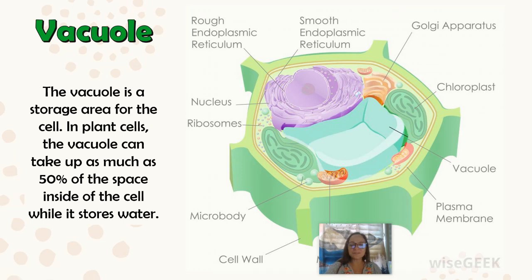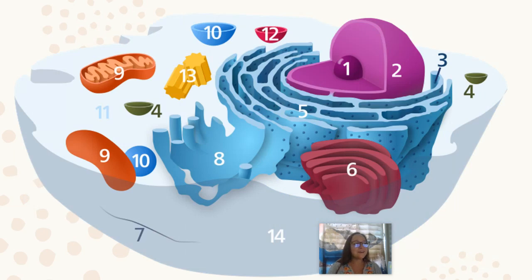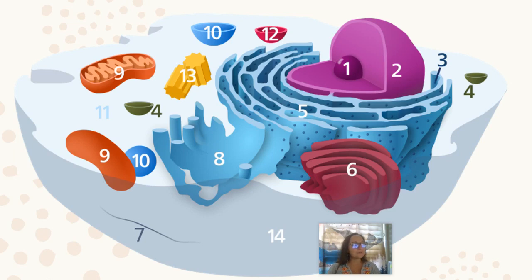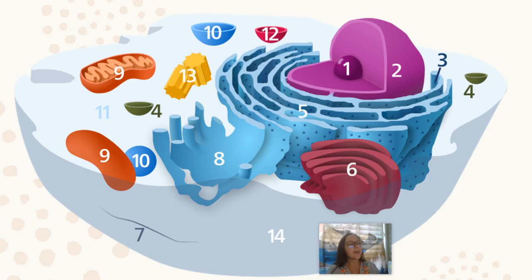That is my overview on eukaryotic cell organelles. Feel free to hit pause and quiz yourself on this picture. A few things I didn't cover: centrioles, which are used in cell division; peroxisomes, which break down hydrogen peroxide; and vesicles, which transport or move things within a cell.